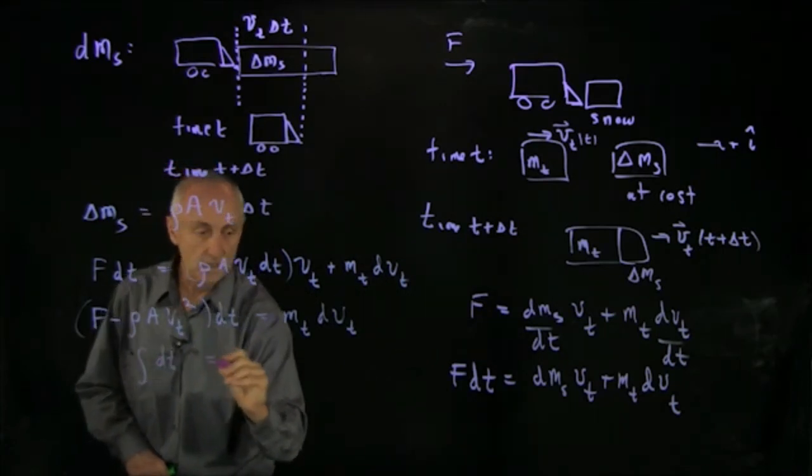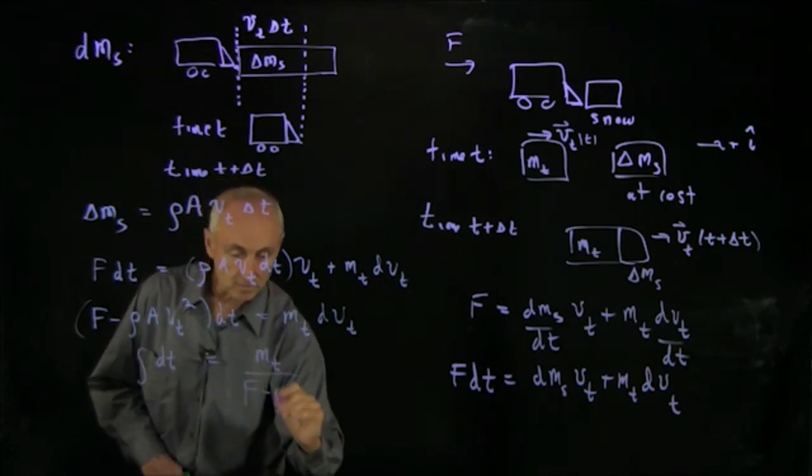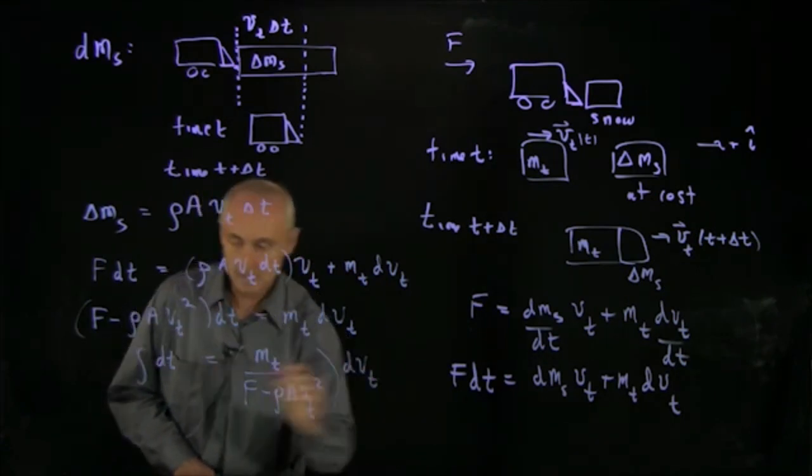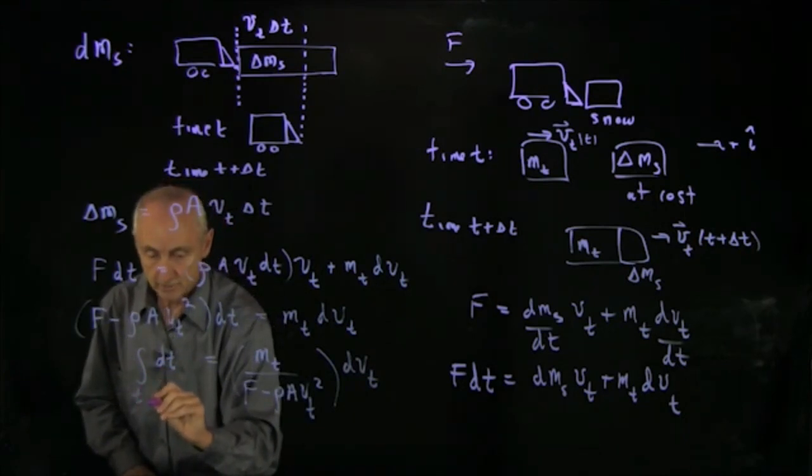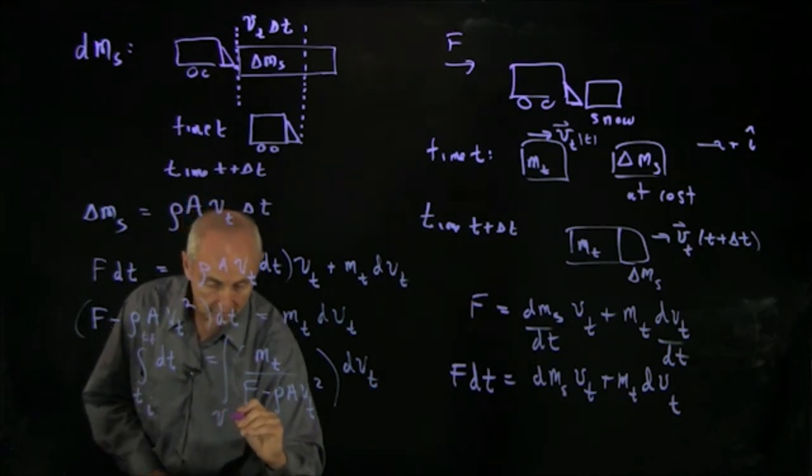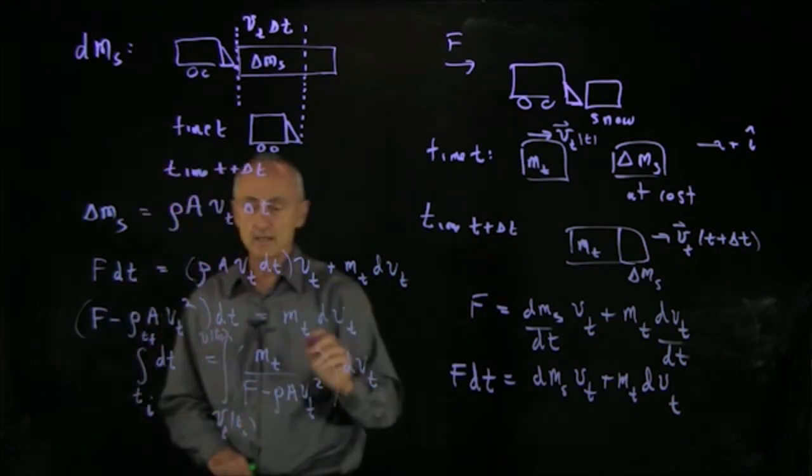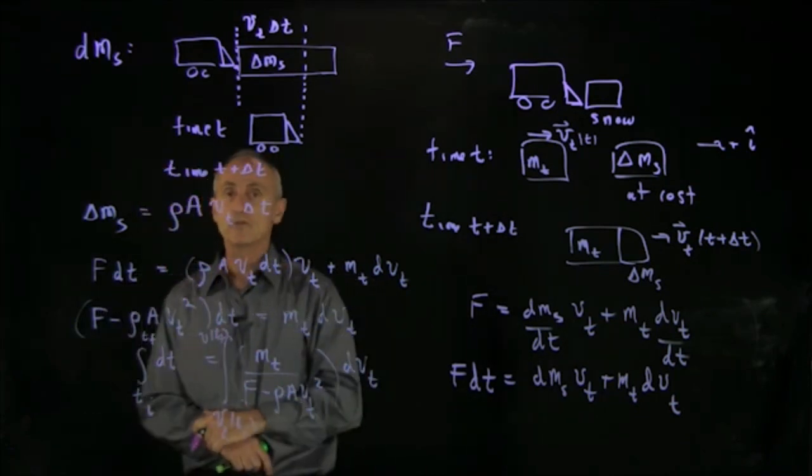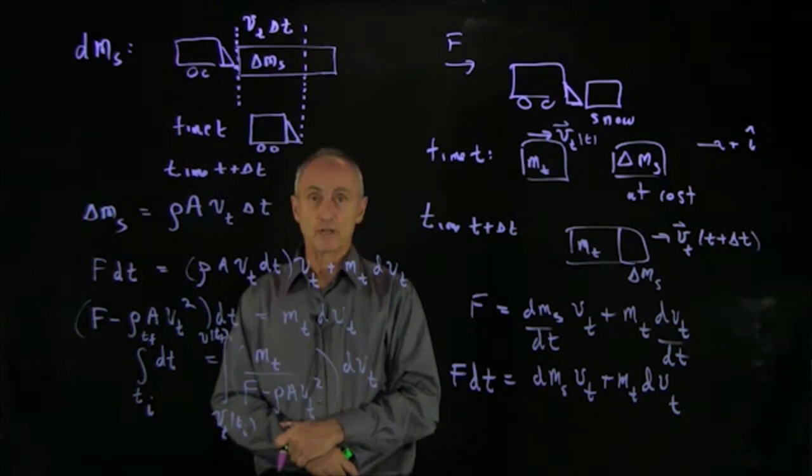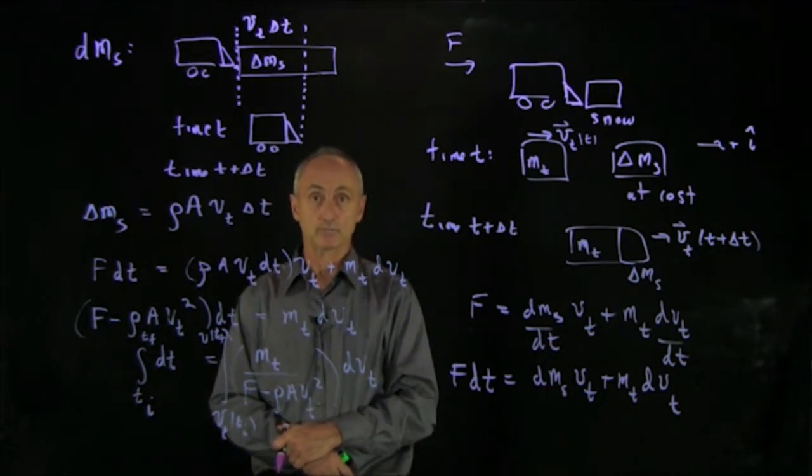So we have dt is equal to mt divided by F minus rho A vt squared dvt. And we integrate from some initial time to some final time. And here we're integrating from v of truck from some t initial time to some final time. And that's our integral version for finding the velocity. This integral is an integral that's not hard to do, that you should try as an exercise in elementary calculus.